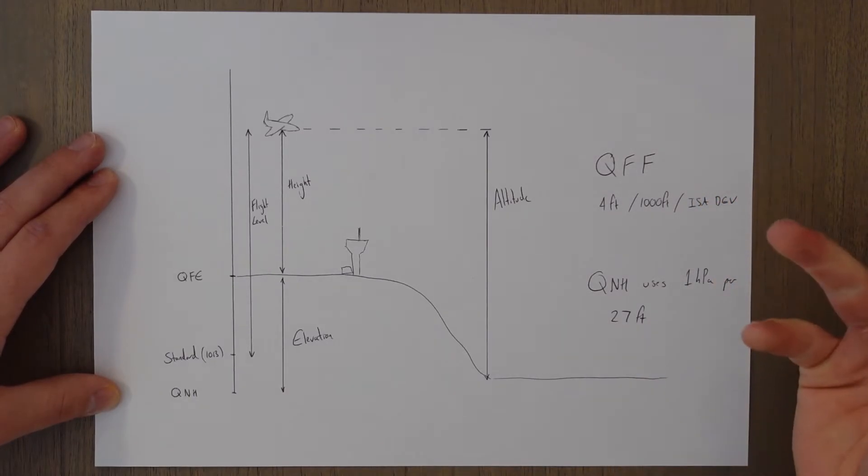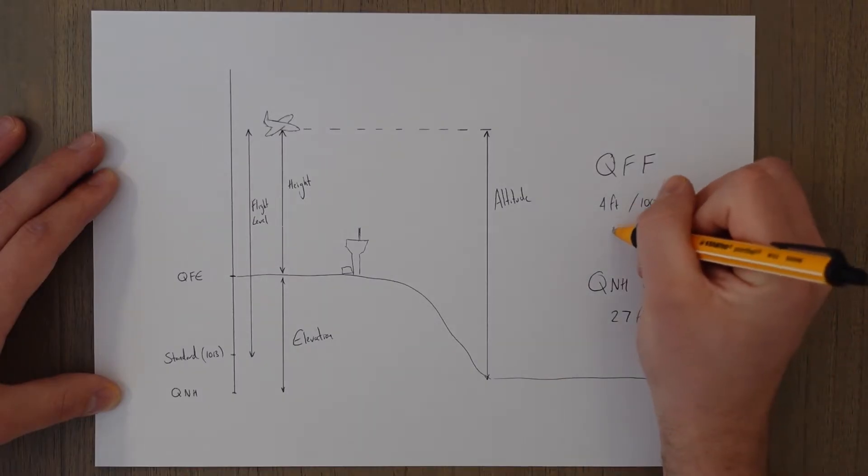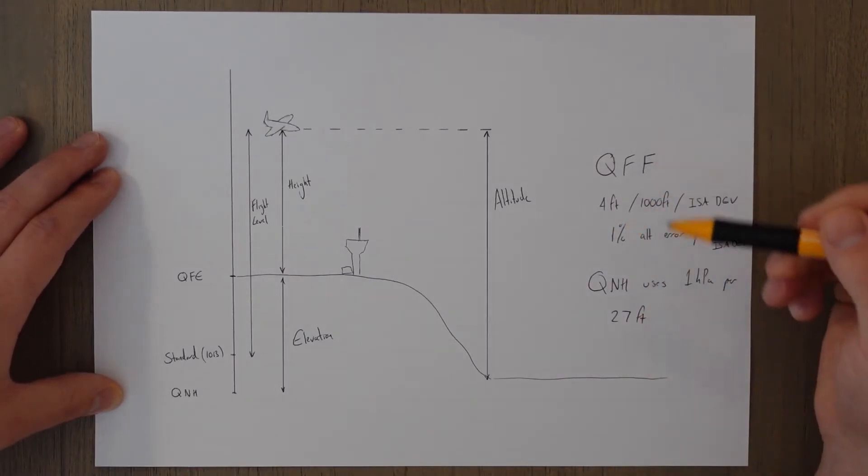Or as a good rule of thumb, you can use a one percent altitude error for every 2.5 degrees of ISA deviation. So that's where the main difference is between QFF and QNH.